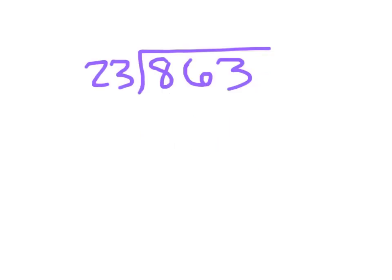Here we have 863 divided by 23, where 23 is our divisor. We're trying to see how many times that 23 can go into this number, 863. Again, like single-digit division, we take our divisor and start with the largest place, that hundreds place. 23 cannot go into 8. However, 23 can go into 86.